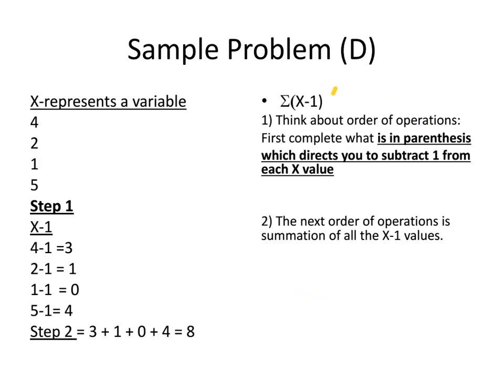Our final problem has parentheses first, and inside the parentheses we subtract 1 from each value. So: 4 minus 1 equals 3, 2 minus 1 equals 1, 1 minus 1 equals 0, 5 minus 1 equals 4. Then we summate: 3 plus 1 plus 0 plus 4 equals 8. Go ahead and practice these, and remember that the order of operations is going to be very important going forward for getting the right answer. Make sure you write them down and have them handy when solving problems.